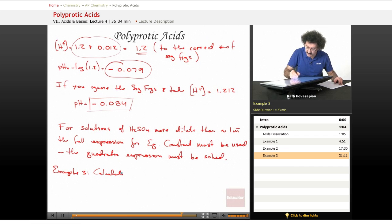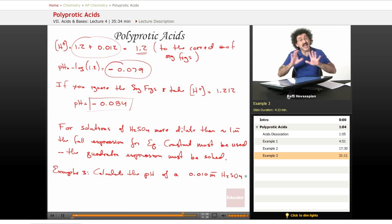Let's calculate the pH of a 0.010 molar H2SO4. This is pretty dilute, 0.01 molar, a lot less than 1, so we can't ignore the second dissociation.